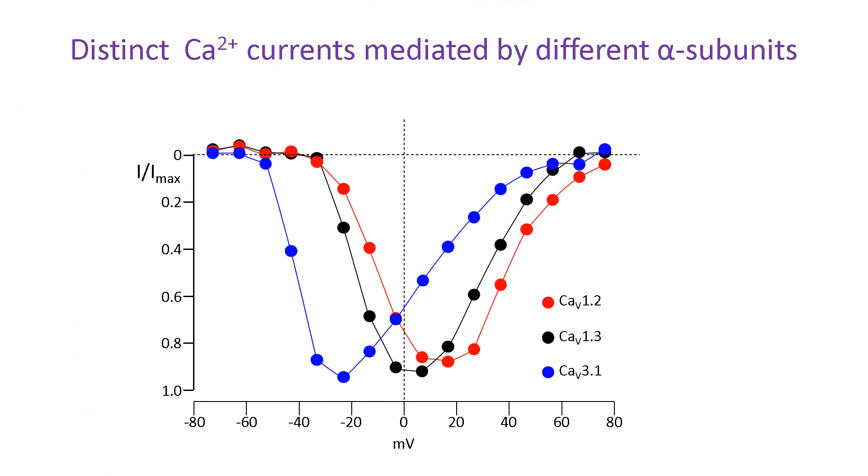Another group of voltage-gated ion channels is the calcium channels, which are important for controlling the flux of calcium ions into cells. The current voltage relationships for three different calcium channel alpha subunits are shown here. To ease comparison, the y-axis is plotted as the normalized current or the ratio of current amplitude to the maximum amplitude measured for each channel. As calcium currents are always inward, the amplitudes are plotted with an inverted y-axis to indicate downward currents. As a cell depolarizes, inward current increases due to channels opening. The current amplitude reaches a peak when the maximum level of current activation is achieved.